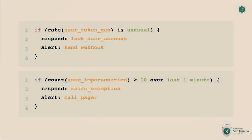We have these four items in our toolbox and we need to architect them together. Using any streaming engine, we can quite easily express high-level logic such as: if the rate of the user token generation function is unusual, then lock the user account and send a webhook alert. Another example: if the number of calls to a user impersonation function is more than 10 in one minute, raise an exception and call a pager.